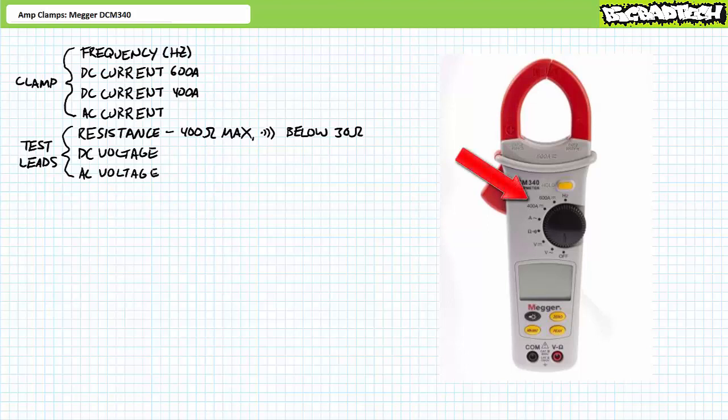To place the Mega DCM 340 in DC amp clamp mode, simply turn the dial to one of two selections. Up to 400 amps DC, or up to 600 amps DC, signified by a straight line. Let's use the smaller 400 amp scale.